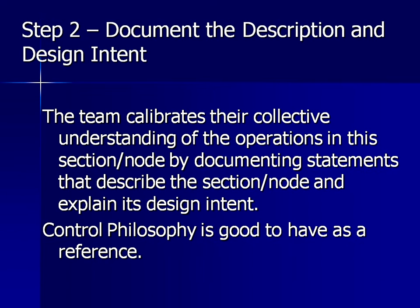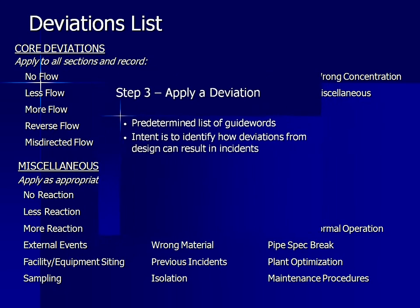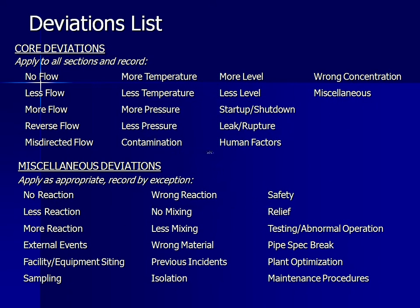In Step 2, the team documents the node description and design intent by referring to the control philosophy. In Step 3, we then discuss process deviations to the design. We will add various core deviations to each node, including changes in flow, temperature, pressure, level, leaks, concentrations, among other issues.